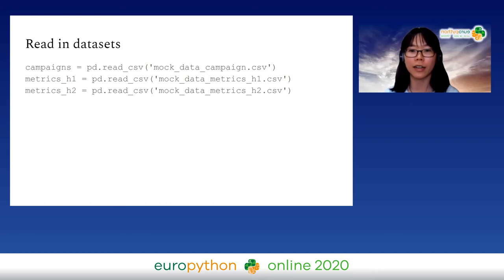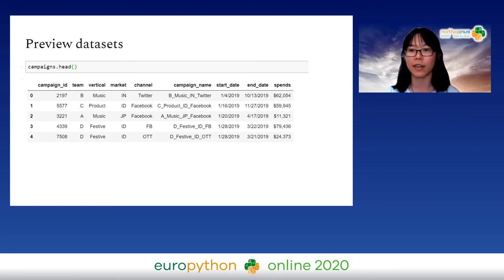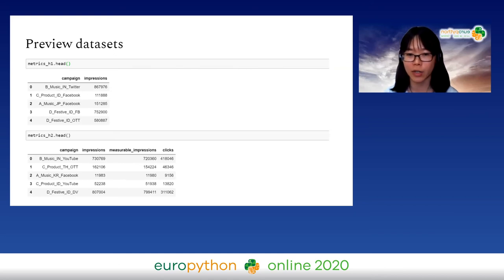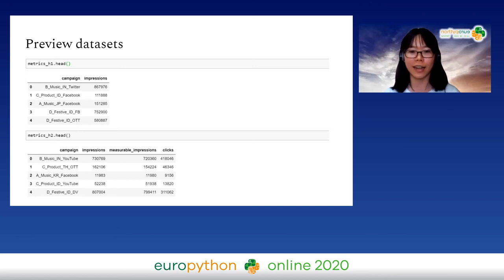There are three datasets I've created — all mock data. The first dataset, 'campaigns,' has information relating to advertising campaigns: which market and platform they ran on. The other two datasets relate to viewability metrics like impressions — one for H1 (first half of year) and one for H2 (second half). More data was collected in the second half, and different teams collected the data differently, so there can be inconsistencies in naming.